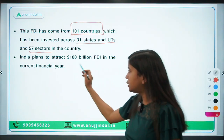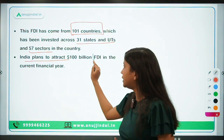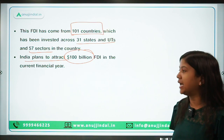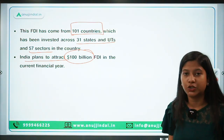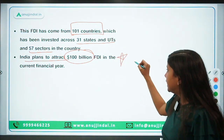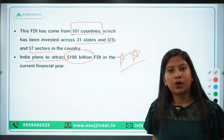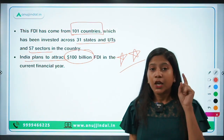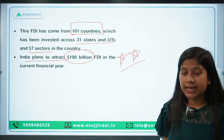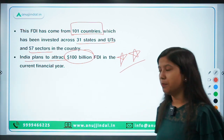India is planning to attract $100 billion FDI in the current financial year. This is a very important statement — you can expect it as a one-marker in your ESI paper. Do remember this figure.